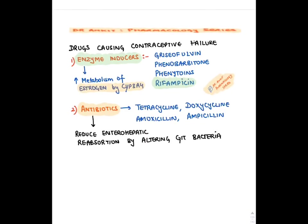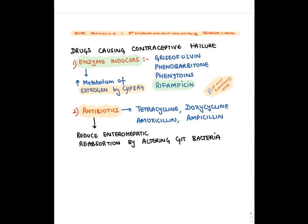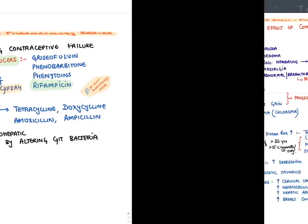Drugs causing contraceptive failure include enzyme inducers like rifampicin, which increase estrogen degradation, and antibiotics, because estrogen undergoes enterohepatic reabsorption with help of gut bacteria — antibiotics damage gut bacteria, reducing estrogen reabsorption into blood and decreasing contraceptive efficacy.